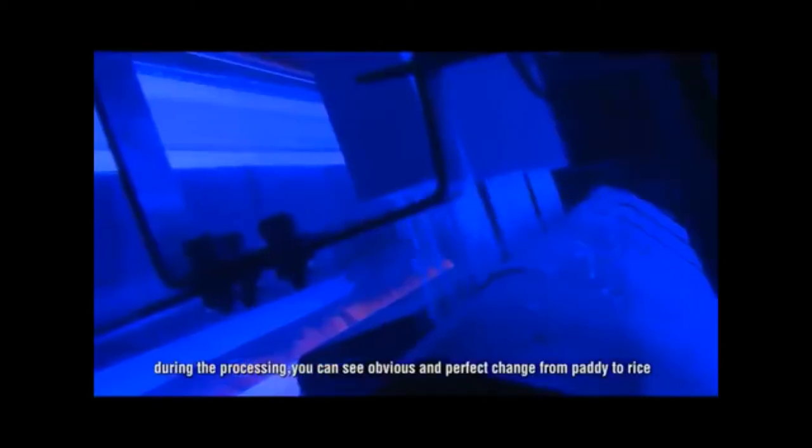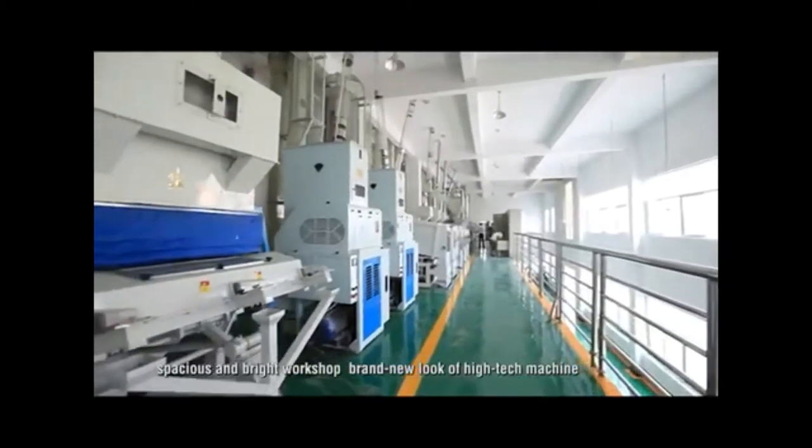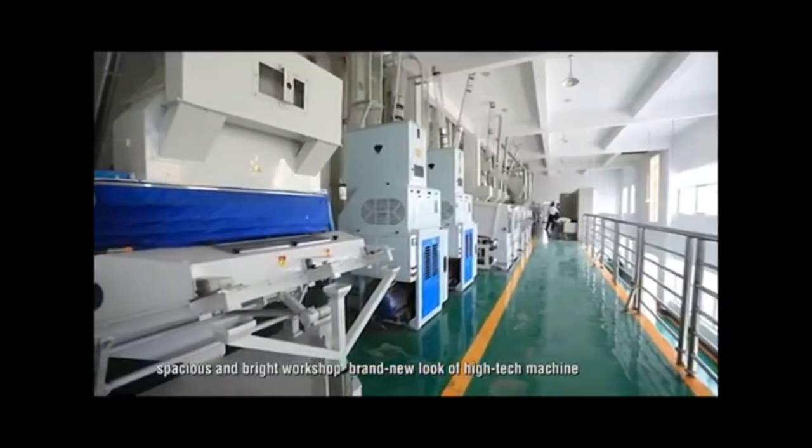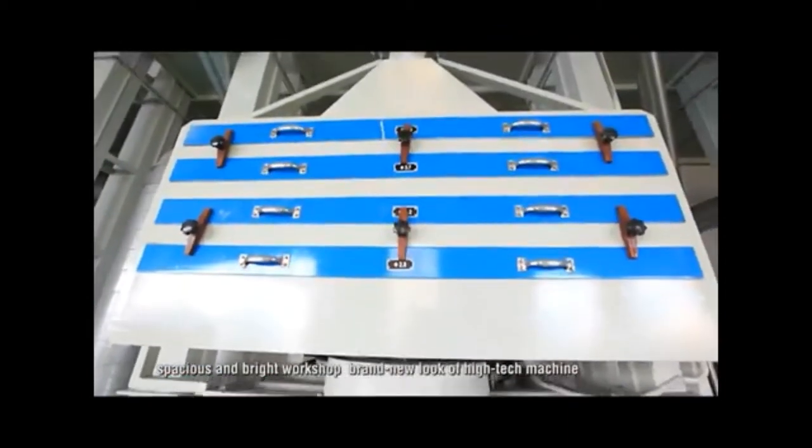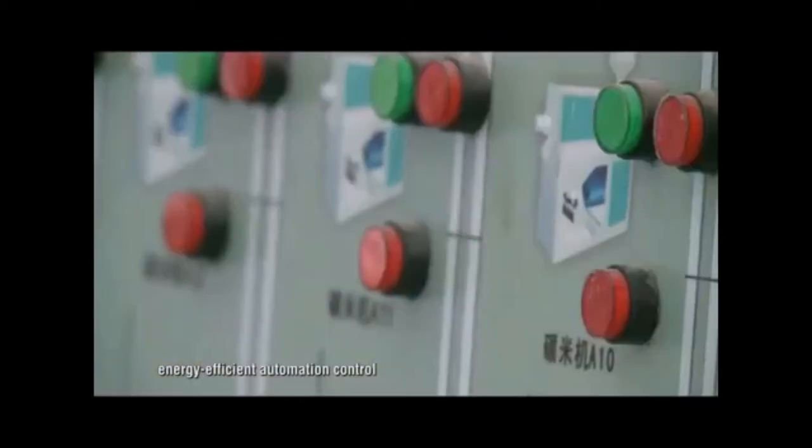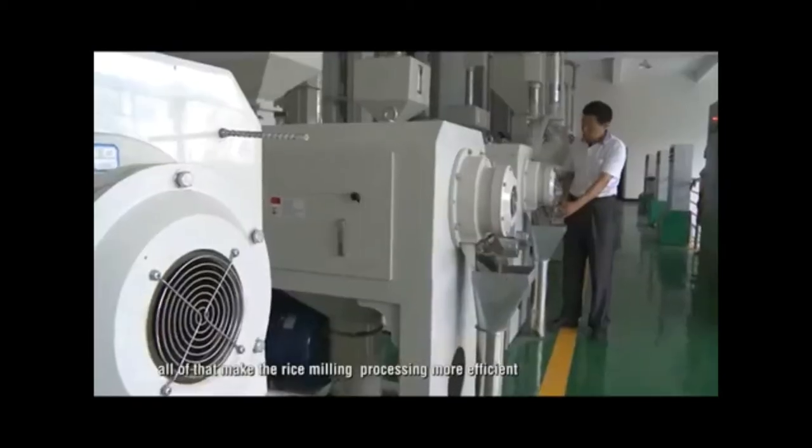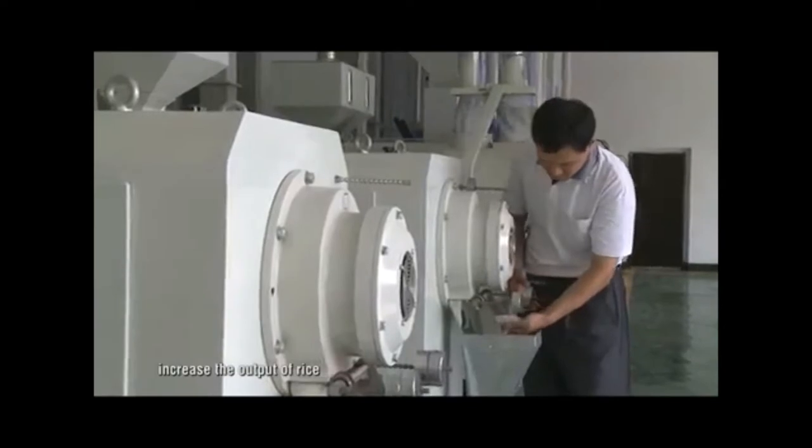During the processing, you can see obvious and perfect change from paddy to rice. Spacious and bright workshop, brand new look of high-tech machine, and energy efficient automation control. All of that makes the rice milling processing more efficient and increases the output of rice.